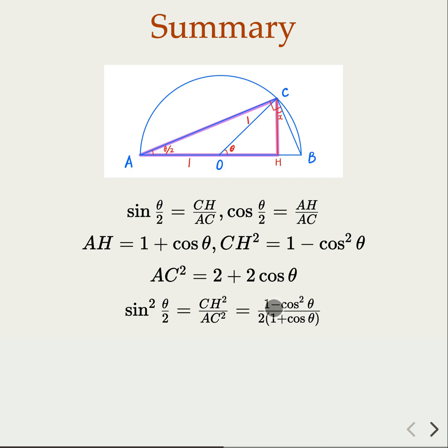But of course, 1² minus, you know, A² minus B² equals A minus B times A plus B. In other words, it's going to be 1 minus cosine θ times 1 plus cosine θ. And this is going to cancel here. 1 plus cosine θ goes away. So you get the desired formula here for half-angle sine.